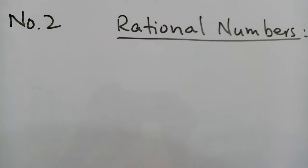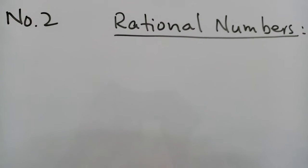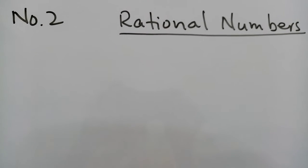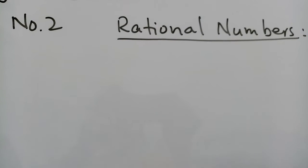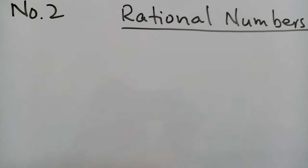We also learnt about the concept of additive identity and multiplicative identity, and we also learnt how to compare and order rational numbers. These are key points which I have told you in this chapter.